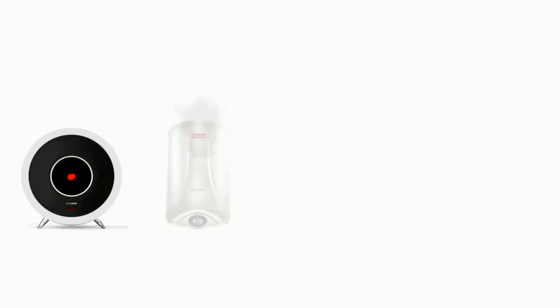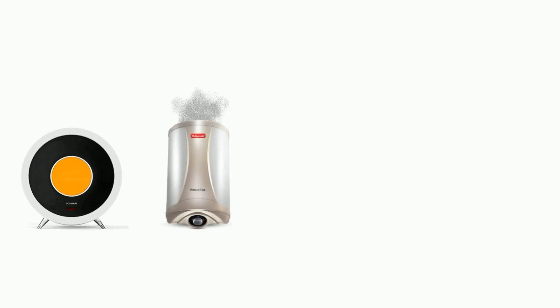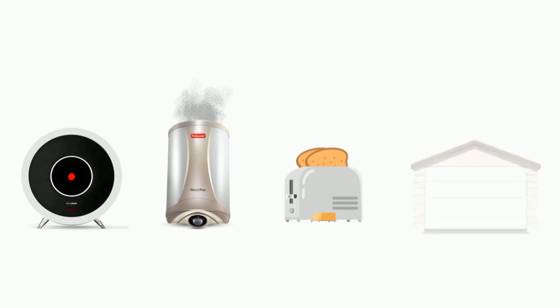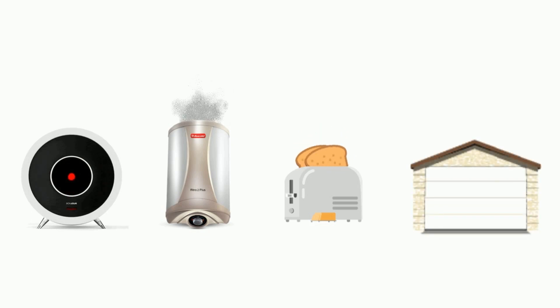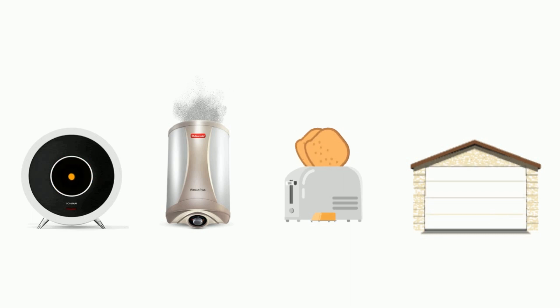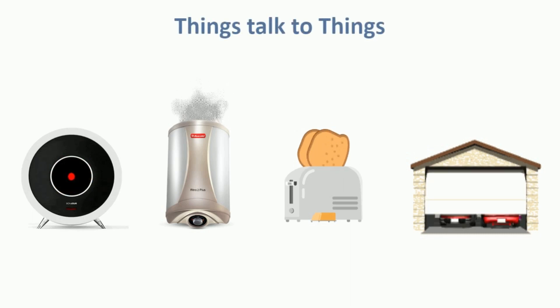To wake up early in the morning, we set an alarm. As we wake up, we turn off the alarm, which turns on the geyser. As we take the bath and get ready, the geyser notifies the kitchen appliances and keeps breakfast ready. And as the next step is to go to the office, the car garage is also opened. Here, things communicate to things and make daily tasks easy for us, eliminating human involvement to avoid human errors.